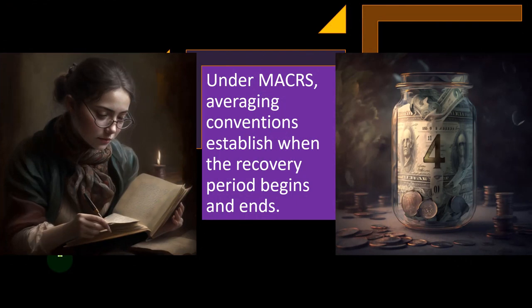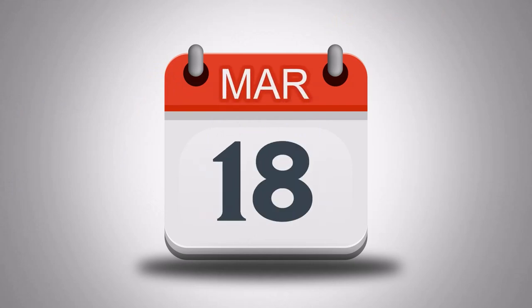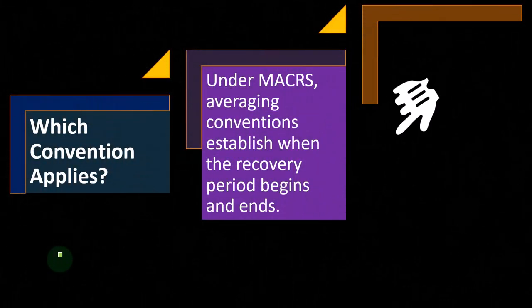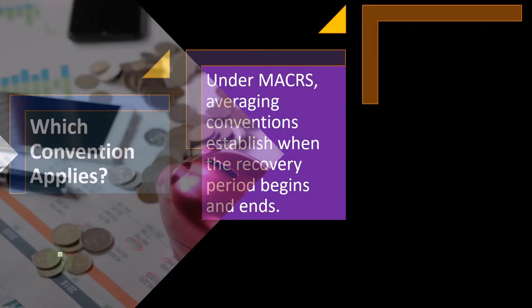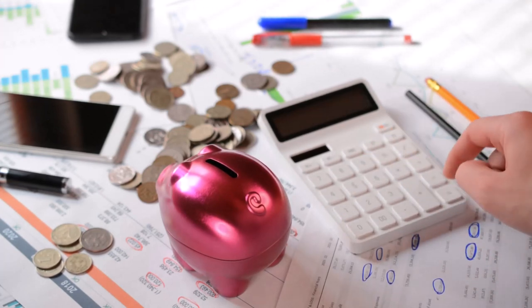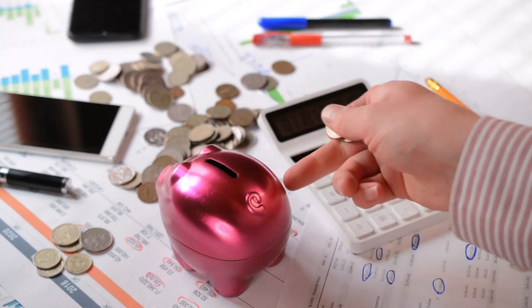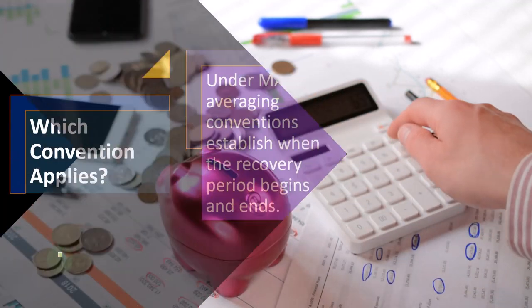We can also ask: what happens if I buy property in the middle of the year? Obviously, a purchase won't always fall on January 1st. Conventions address this — for example, we might assume the property was bought in the middle of the year, making the calculation easier rather than using a day-count ratio analysis.